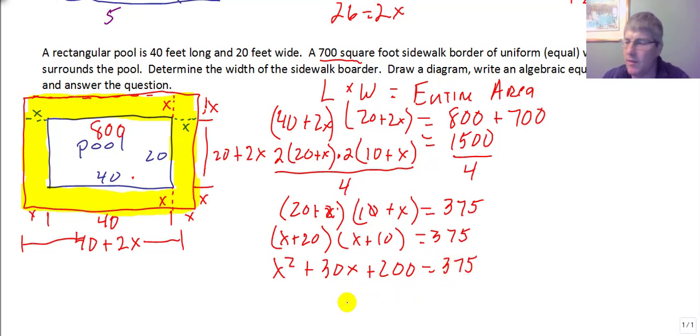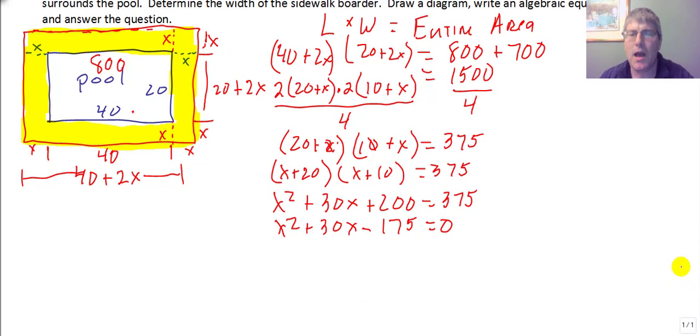We have to set one side equal to 0. So we get x squared plus 30x minus 175 equals 0. Now this is probably factorable, but I'm going to go ahead and solve this by completing the square. I got x squared plus 30x plus my blank equals a positive 175.